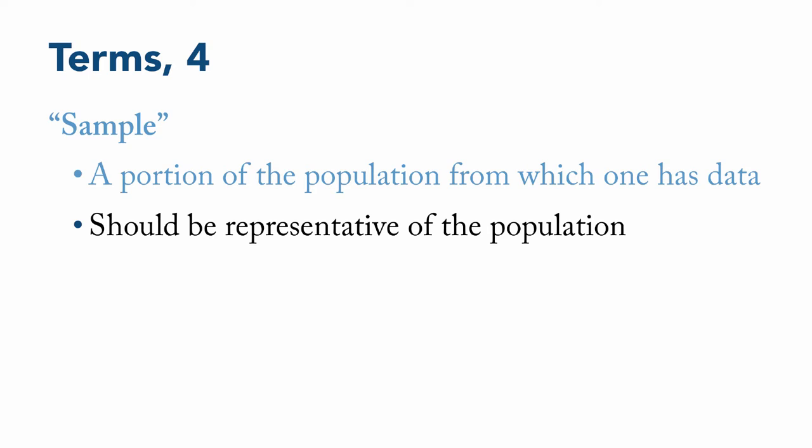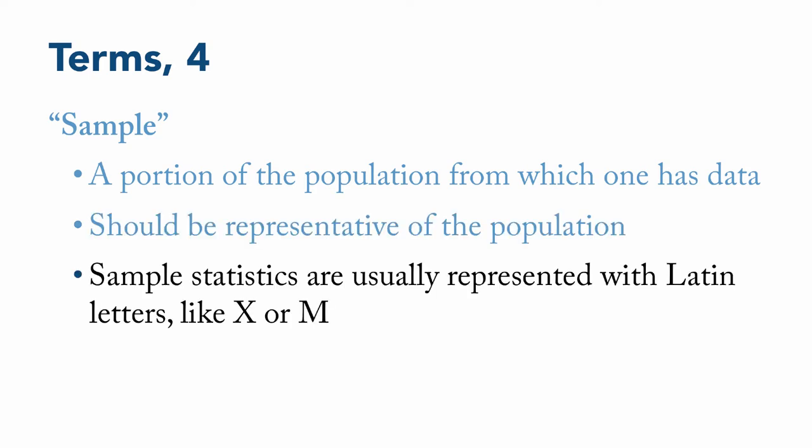As I mentioned just a moment ago, information about a population is referred to as a parameter and uses Greek letters for symbols. In contrast to that, information about a sample is called a statistic and is usually written with Latin letters, which are the regular letters that we use in the English alphabet.